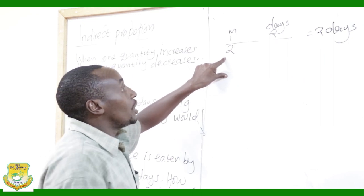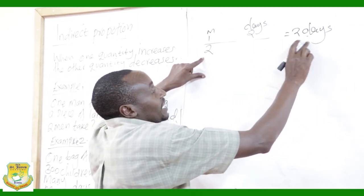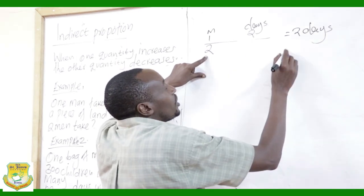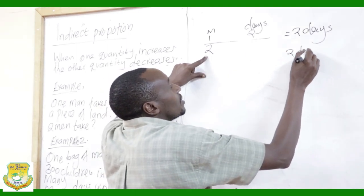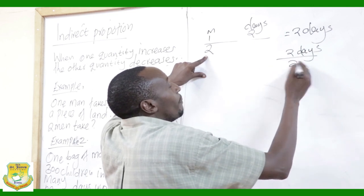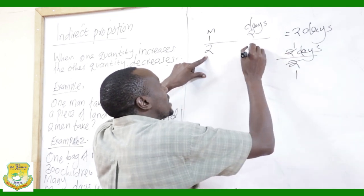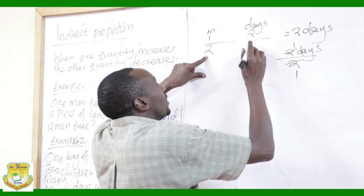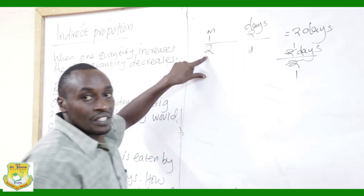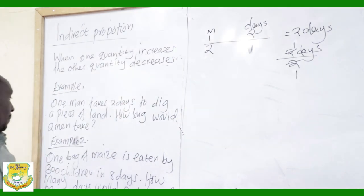The total work is equivalent to two days. If there are two men, we divide the total work by two: two divided by two gives one day. So two men take one day.